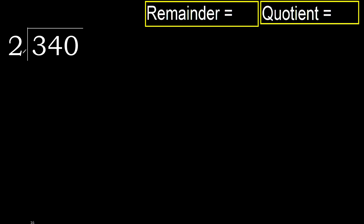340 divided by 2. 3 is not — let's defer with 3. 2 multiplied by which number is nearest to 3 but not greater? 2 multiplied by 2 is 4.